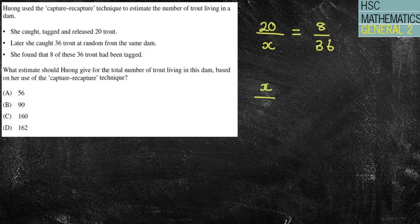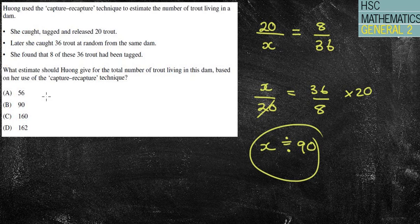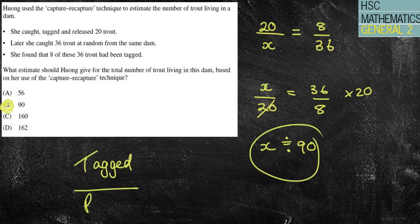I'm going to flip them upside down as I did the previous two questions. Opposite divided by 20 is times by 20. And then I'm going to simply chuck that into my calculator. 36 divided by 8, and then times it by 20. I get approximately equal to 90 trout in my dam. So the answer is B. So again, that comes from doing my tagged over my population.